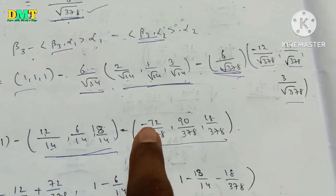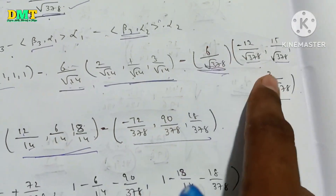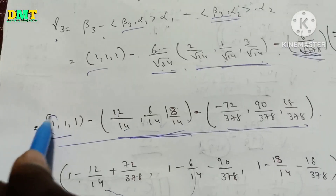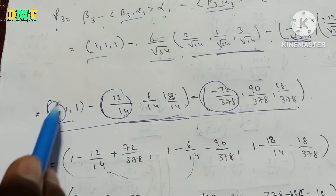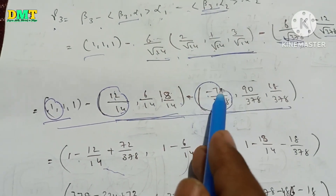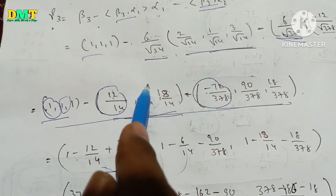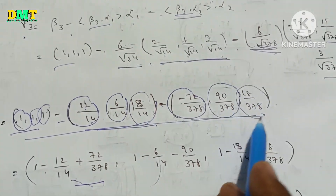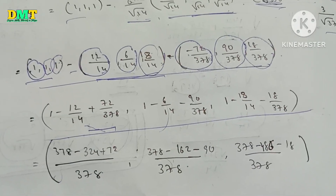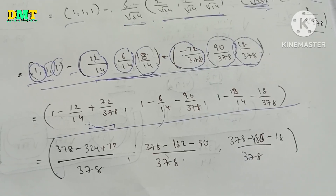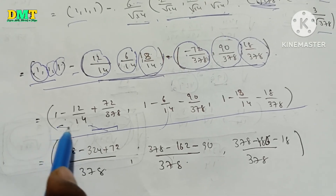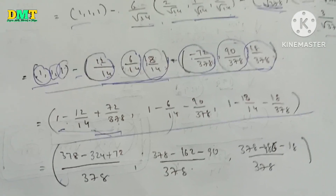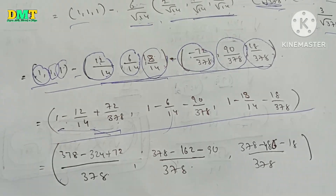So the first component of gamma3 is: 1 minus 12/14 minus 72/378. The second value is: 1 minus 6/14 plus 90/378. The third value is: 1 minus 18/14 minus 18/378. Computing with LCM 14 and 378 step by step.